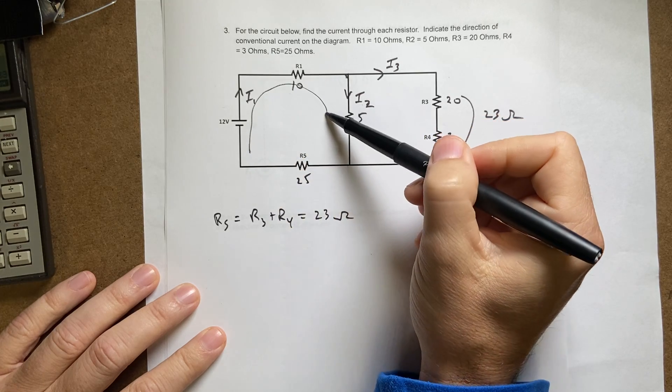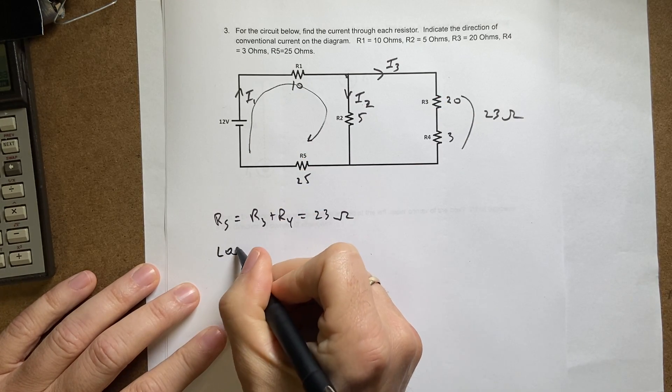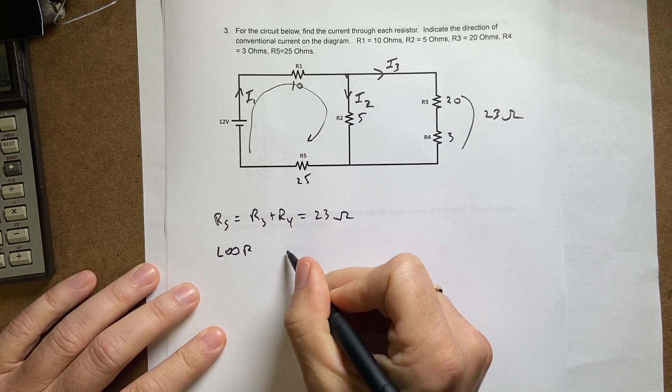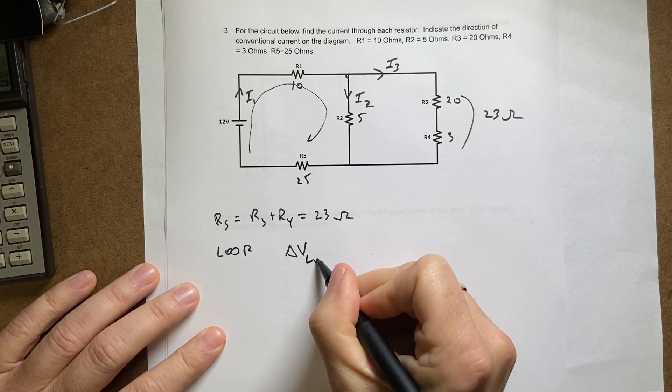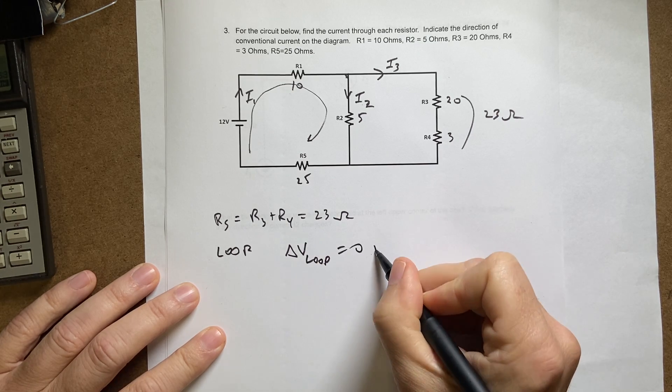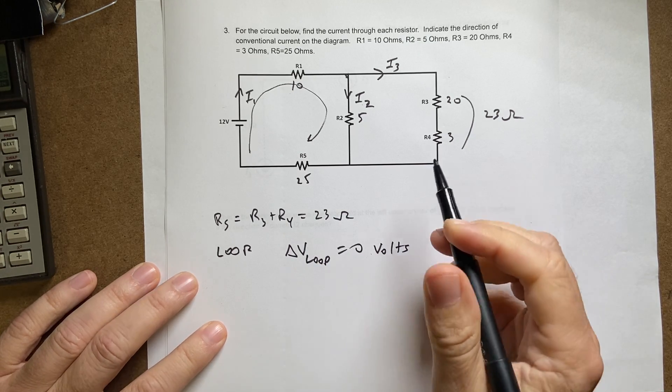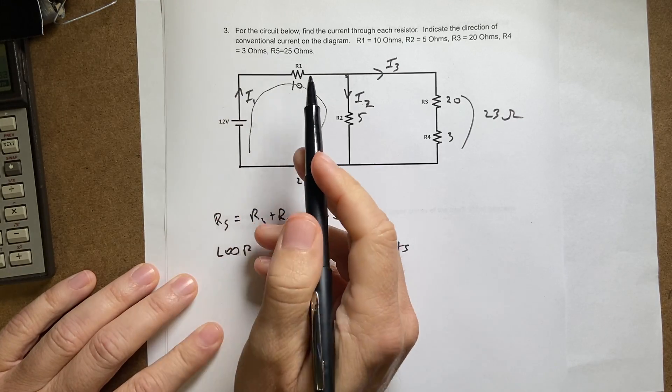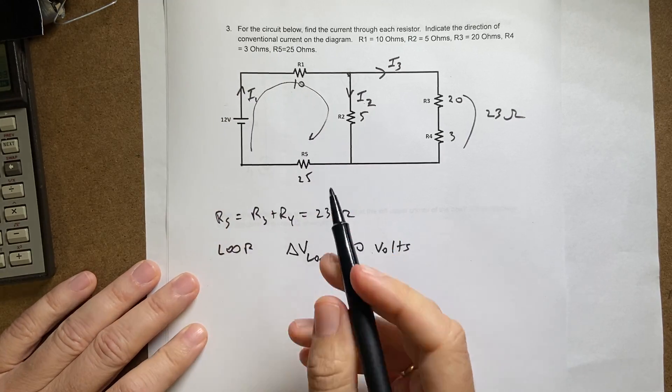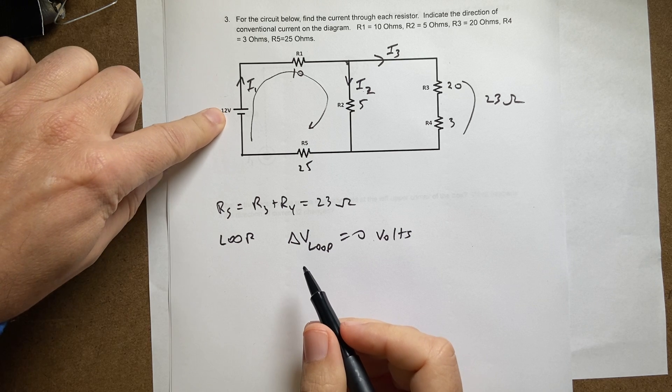So the loop rule says that delta V around a loop equals zero volts. So if I start right here and I go in the direction of the current for this part, I'm going to get—the long line is the positive side of the battery, so I'm going to get positive minus negative, so I get a positive 12 volts. So I'll say 12, I'll just leave off the units.